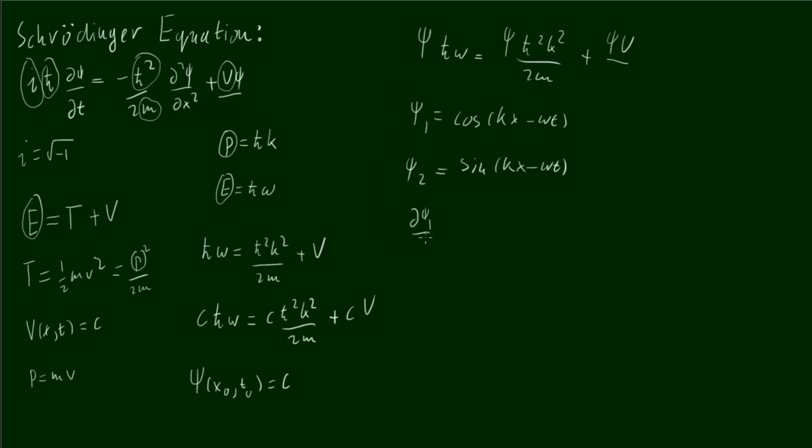d psi 1 over dt, that equals minus omega. The derivative of cosine is minus sine. The things in the bracket stay the same.